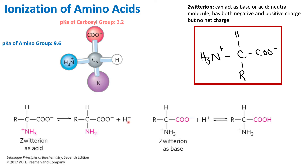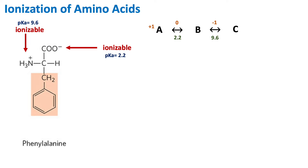This is extremely important when we talk about buffers, because buffers take excess acid or excess base and neutralize it. Now, looking at ionization in more detail with an example: this is phenylalanine. Phenylalanine has the general amino acid structure, with an R group consisting of a CH2 and a resonance-stabilized aromatic ring.